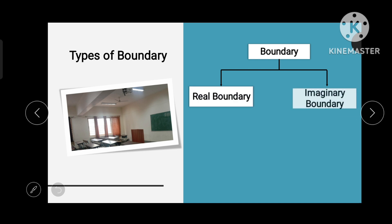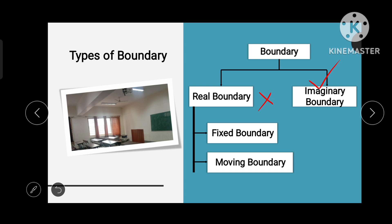The two types of boundary are real boundary and imaginary boundary. The definition of real boundary is: it does not allow mass transfer through it. In imaginary boundary, mass transfer will occur. In real boundary there are further two types: one is fixed boundary and another one is moving boundary. In fixed boundary, mass transfer is not allowed; in moving boundary, mass transfer is allowed.